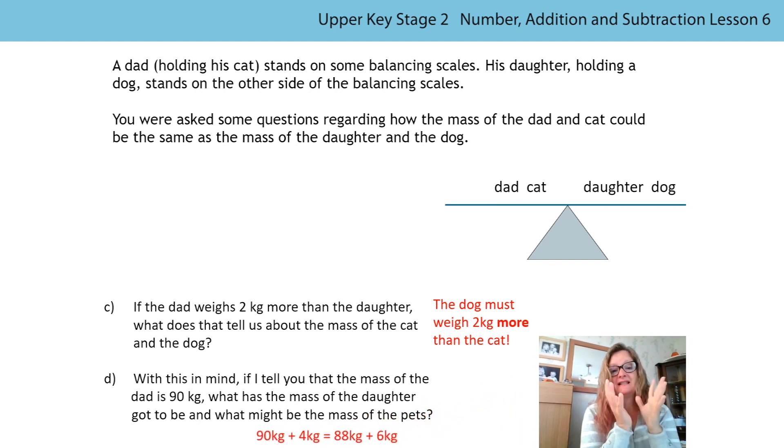Then I gave you the information, I said the dad is actually 90 kilograms so he's a bit more than the average weight of a man. The daughter weighs two kilograms less than that so she must weigh 88. So the mass of the pets could be then anything you wanted but let's try and keep this realistic. But the dog must weigh two kilograms more than the cat so that the scale remains balanced. How did you get on with those? Well done, brilliant, fantastic.